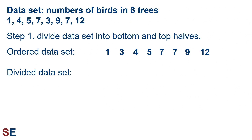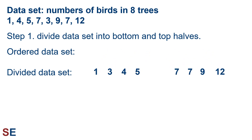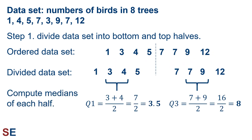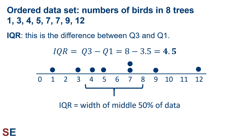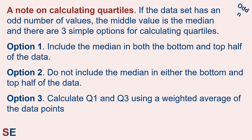Step one is to divide our dataset into bottom and top halves. In the bottom half we have the values 1, 3, 4, and 5. Q1, which is the median of the bottom half, will be the mean of 3 and 4: 3 plus 4 is 7 divided by 2, so Q1 is 3.5. Q3 will be the median of the top half: 7 plus 9 is 16 divided by 2 is 8. The IQR is Q3 minus Q1: 8 minus 3.5 is 4.5. Looking at a figure, the IQR represents the width of the middle 50% of the data — that region of width 4.5 contains 4 out of our 8 values.